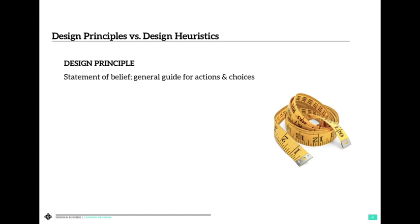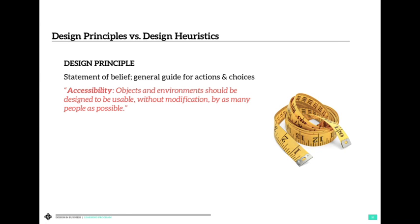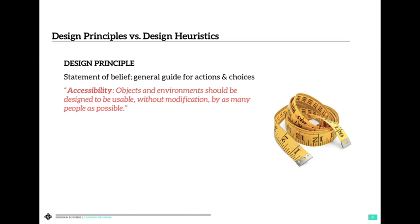A design principle is a statement of belief that guides us in a particular direction to avoid disagreement. For example, an accessibility principle states: objects and environments should be designed to be usable without modification by as many people as possible. This covers situations like the door push/pull conflict — the door has 'push' written on it but has a handle, which tells your mental model to pull. These are the types of things that fit under the accessibility principle.